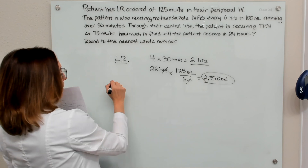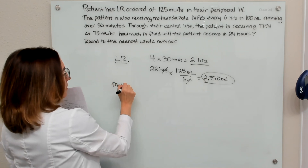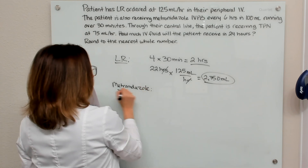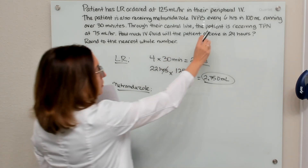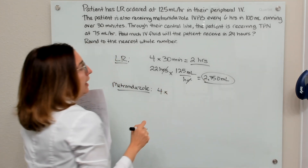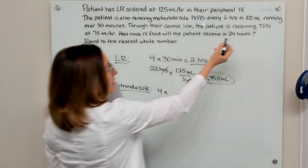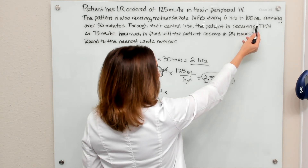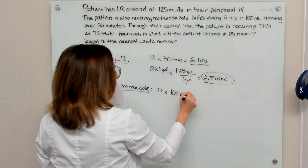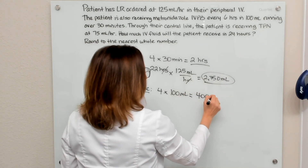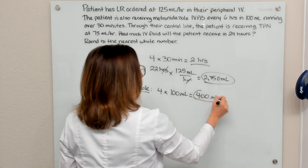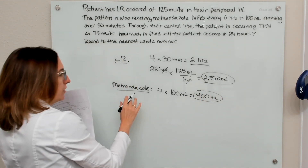Now let's calculate how much fluid they're getting from their metronidazole. Metronidazole is administered every six hours, so four times a day, and every time it's given, they're getting 100 milliliters of fluid. So four times 100 milliliters over the course of 24 hours gives 400 milliliters from the metronidazole.